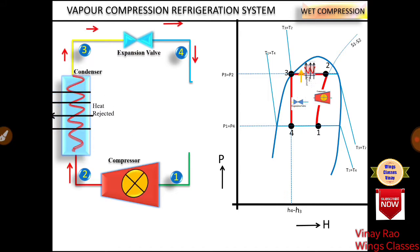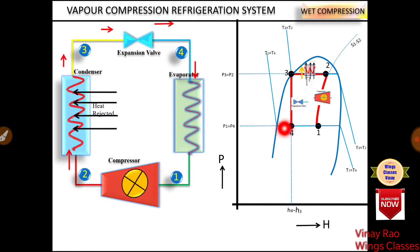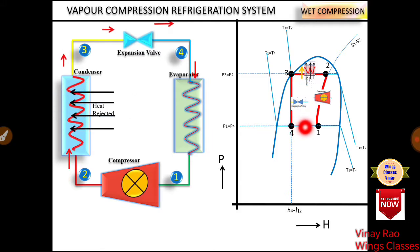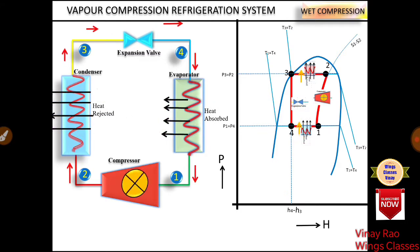From 4 to 1 there is an evaporator unit which absorbs heat energy from the system — this is where the actual refrigerating effect is produced. At point 4, liquid particles continuously absorb heat from the system and are converted into vapor form. At point number 1, the maximum part of the refrigerant is in vapor form. So 4 to 1 is where the refrigerating effect is produced by heat absorption.